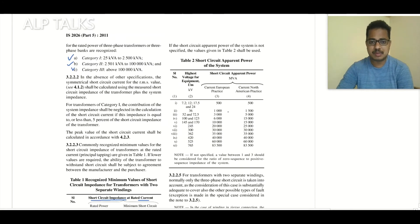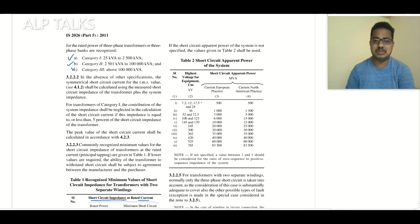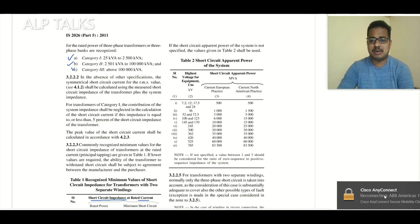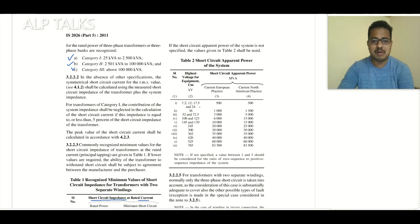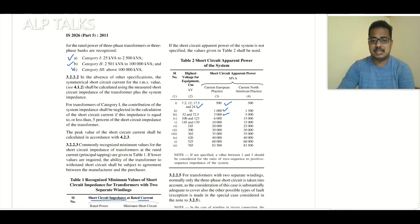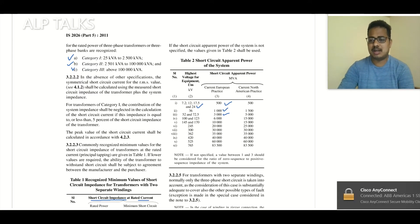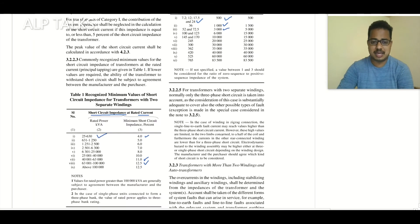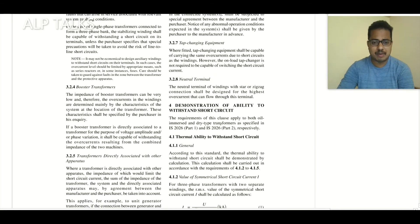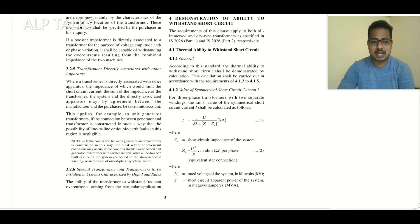You also have short circuit apparent power. If the customer is not specifying anything, you can consider short circuit apparent power as per this table — for example, up to 24 kV you have 500 MVA as per European practice, for 36 kV it is 1000 MVA, and for 52 and 72.5 kV it is 3000 MVA.